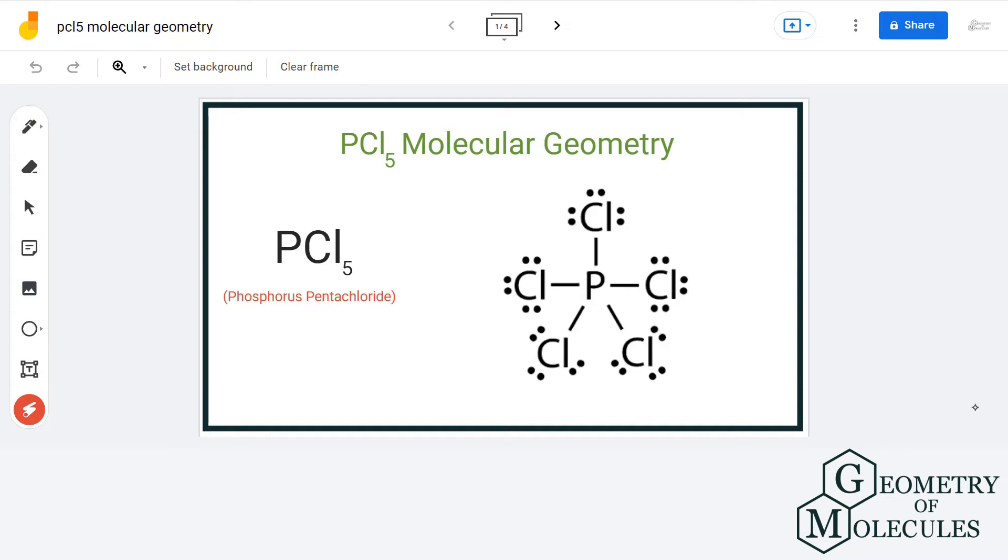Before jumping to the final molecular geometry, we will always look at the number of bonds the central atom forms and the lone pairs attached to it, as both affect the final molecular structure of the compound.